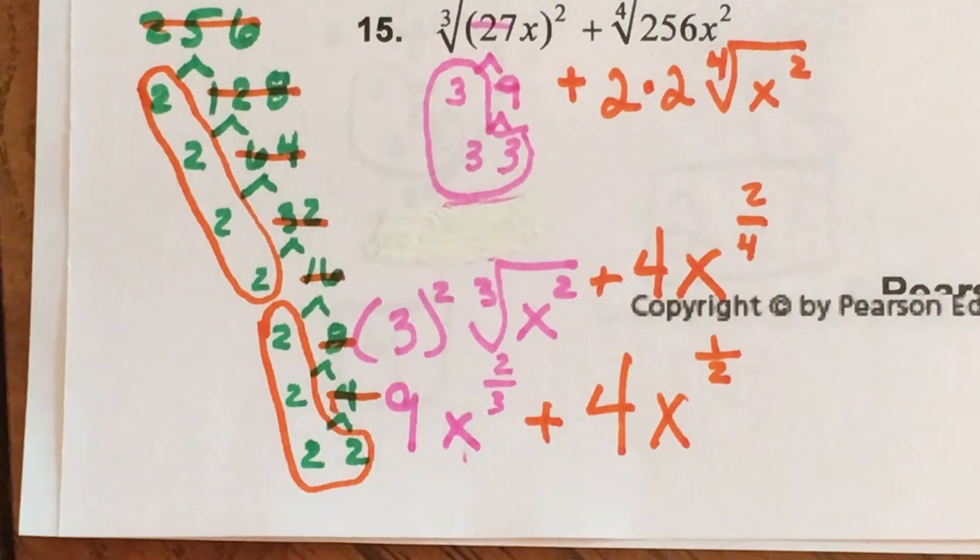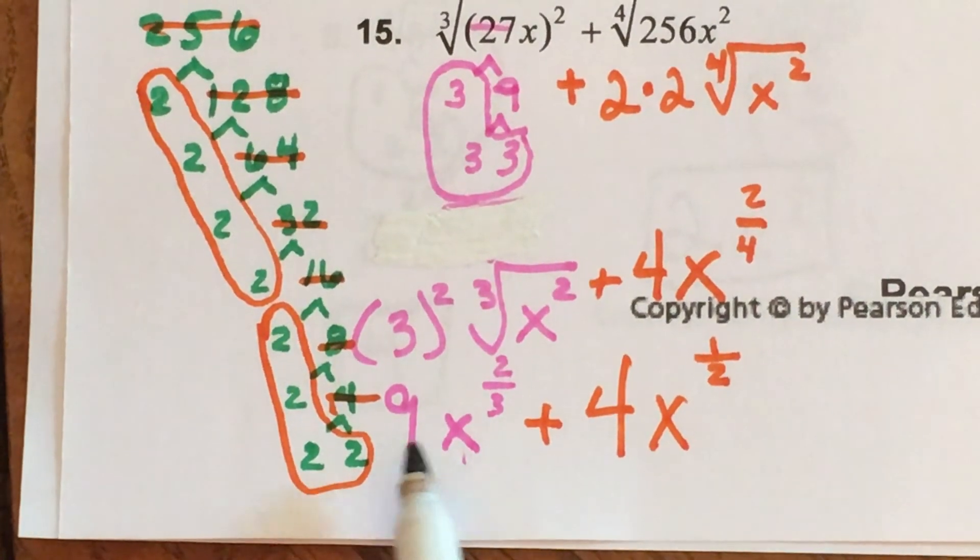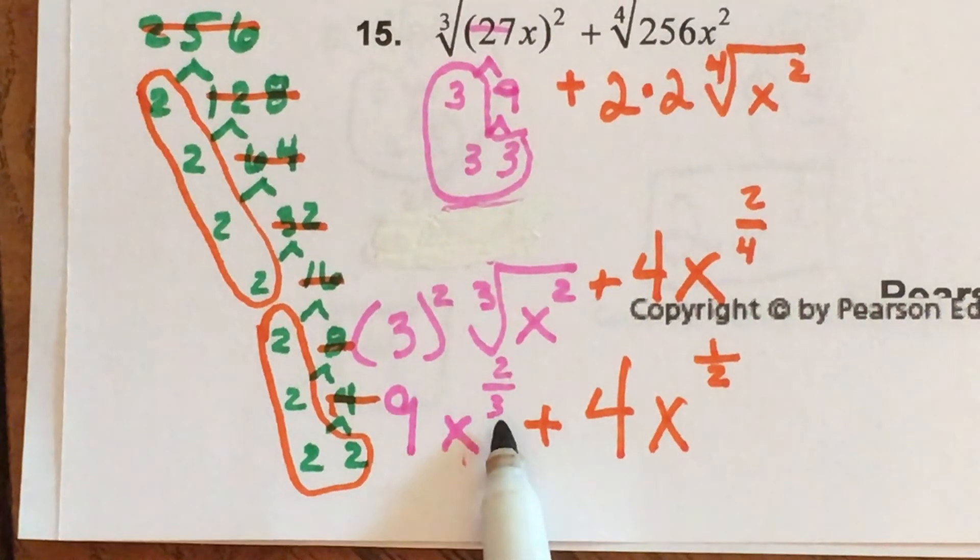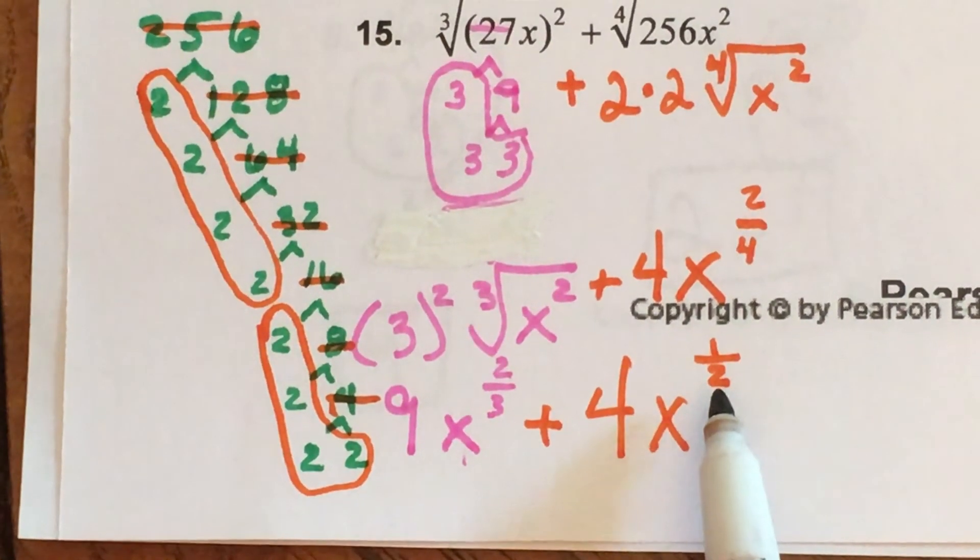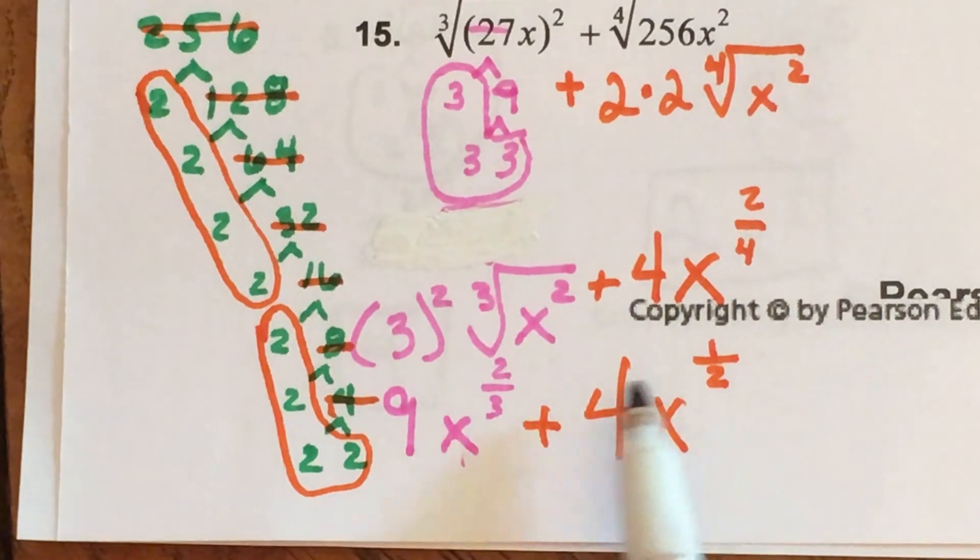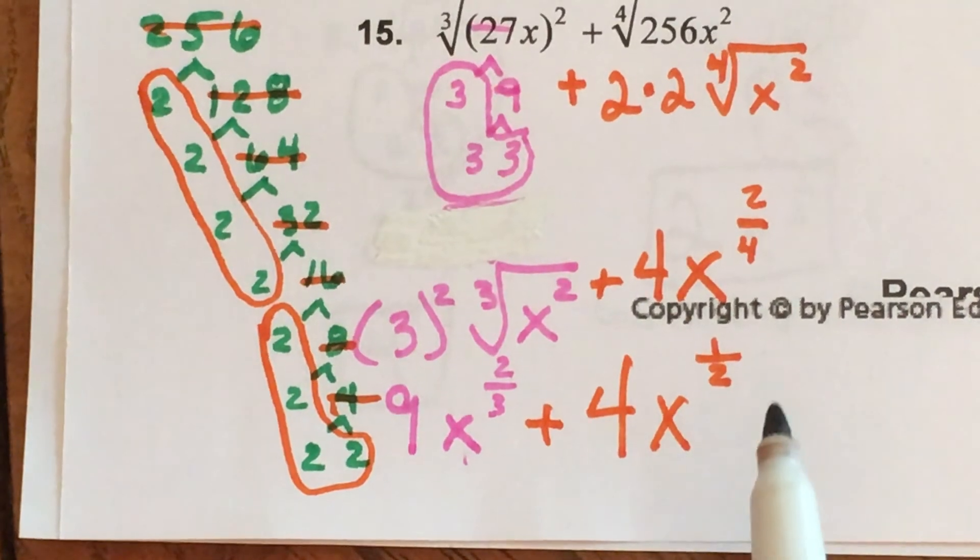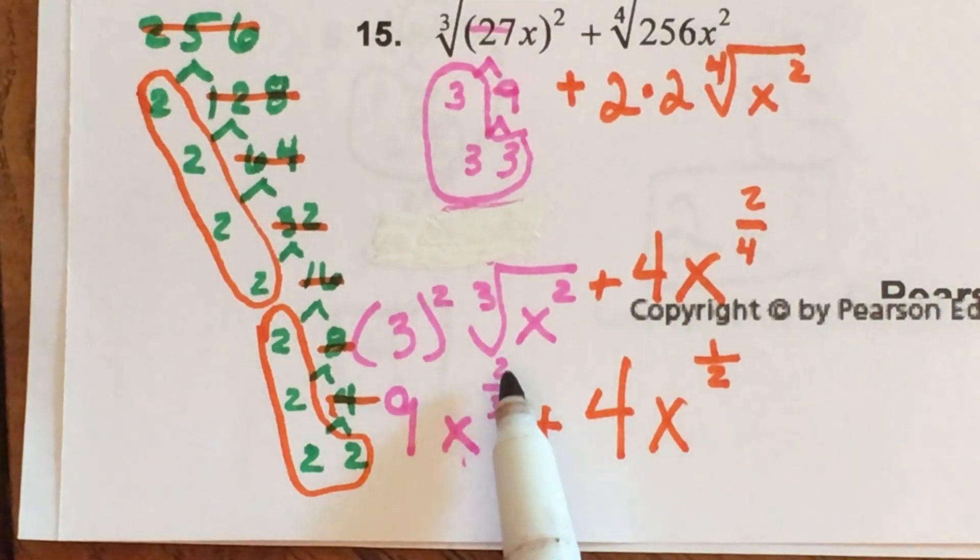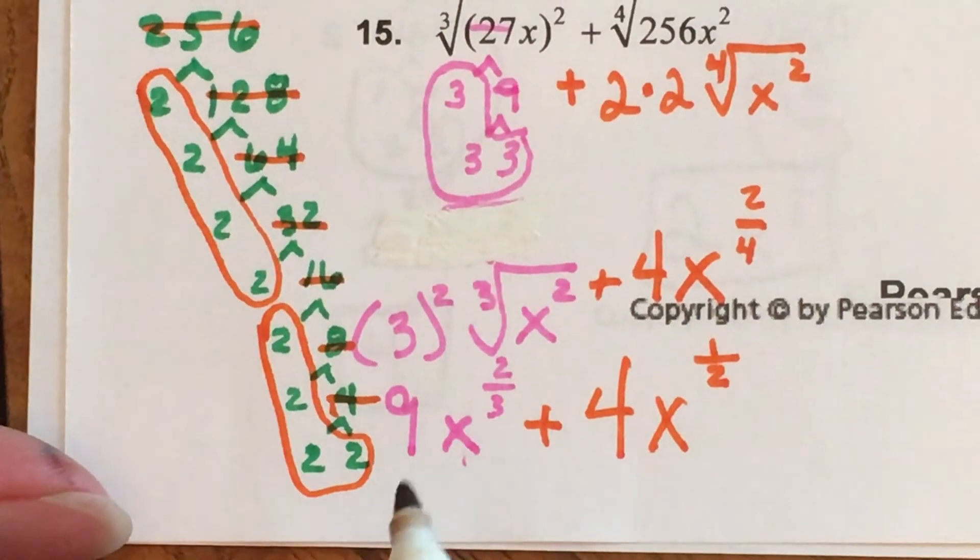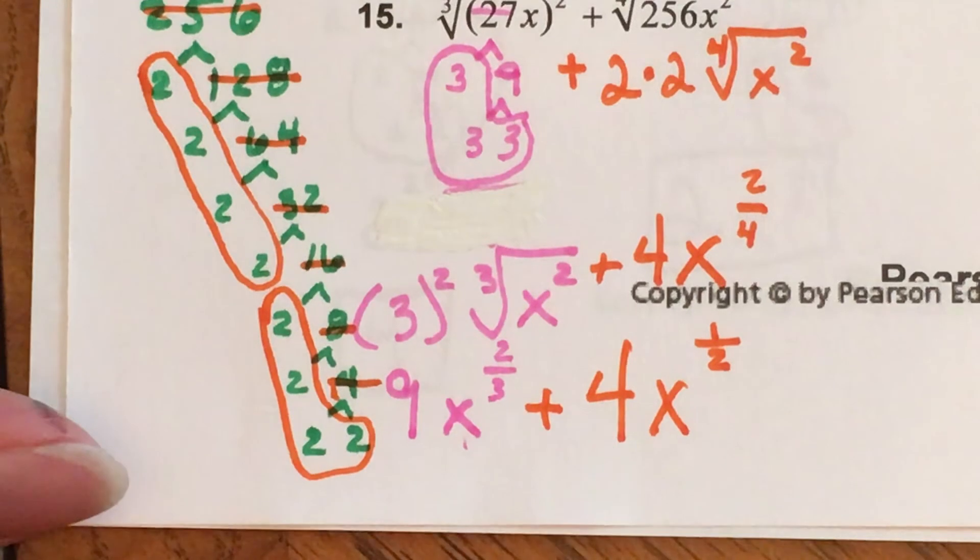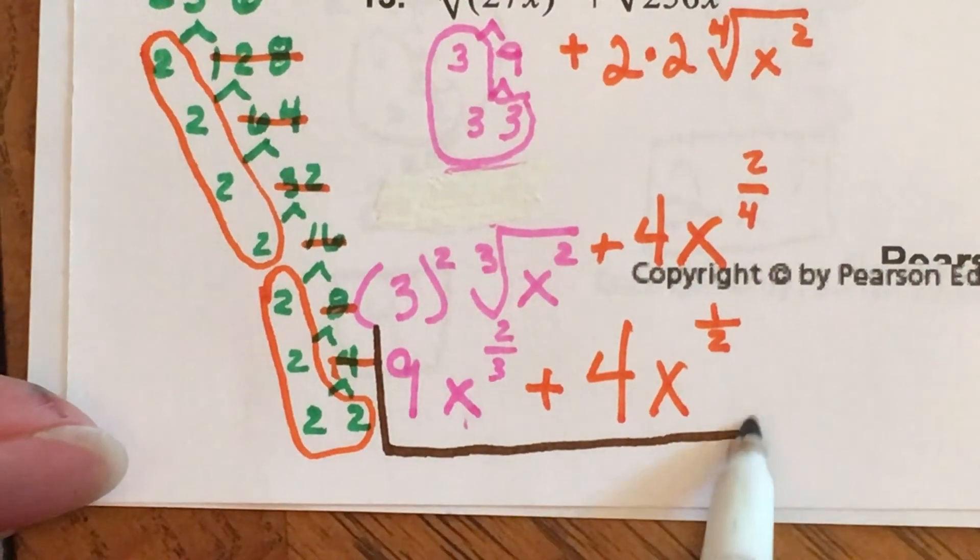Now the million dollar question, are we done yet? Let's check. I have a 9x to the 2 thirds and I have a 4x to the one half. Are my exponents that are on my variable X exactly the same? Is two-thirds the same as one-half? No they are not the same. So can I do anything more with this problem? No it is done.